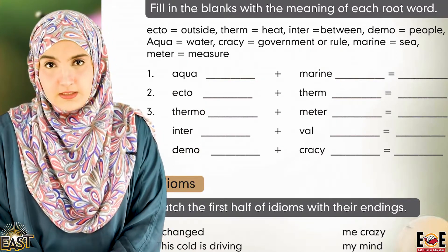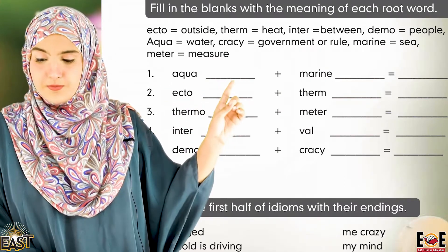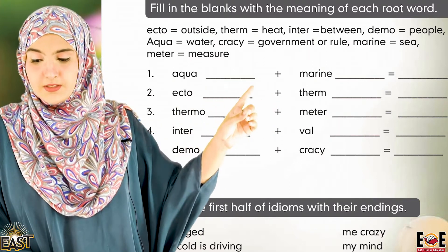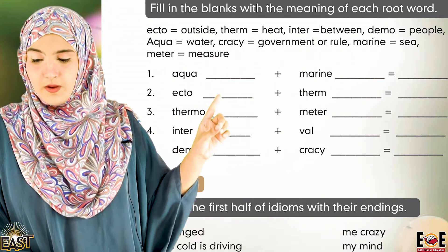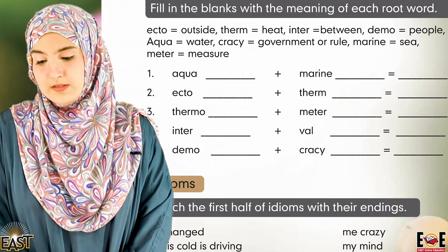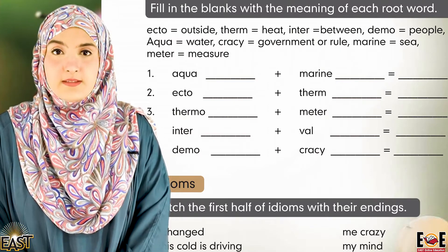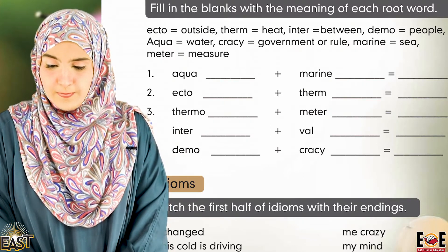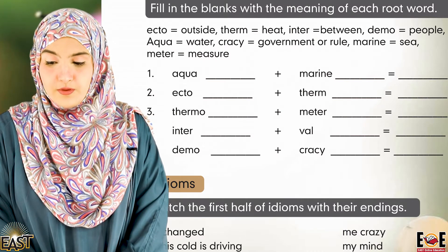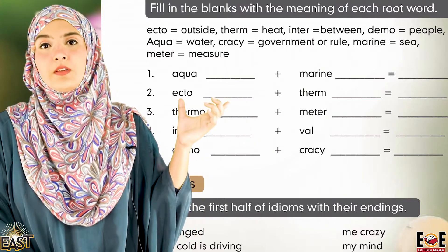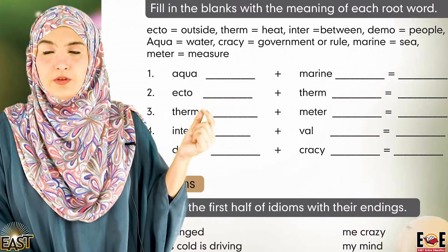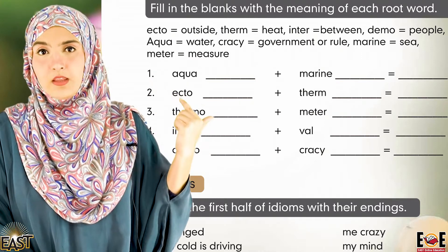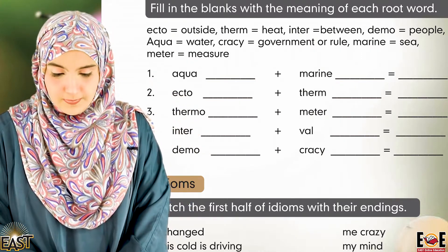We have some words here: equa + marine equals blank, ecto + term equals blank, thermal + meter equals blank, inter + well equals blank. We have to fill in the blanks with the meaning of each root word — we do not put the root word itself, but only its meaning in the blanks.